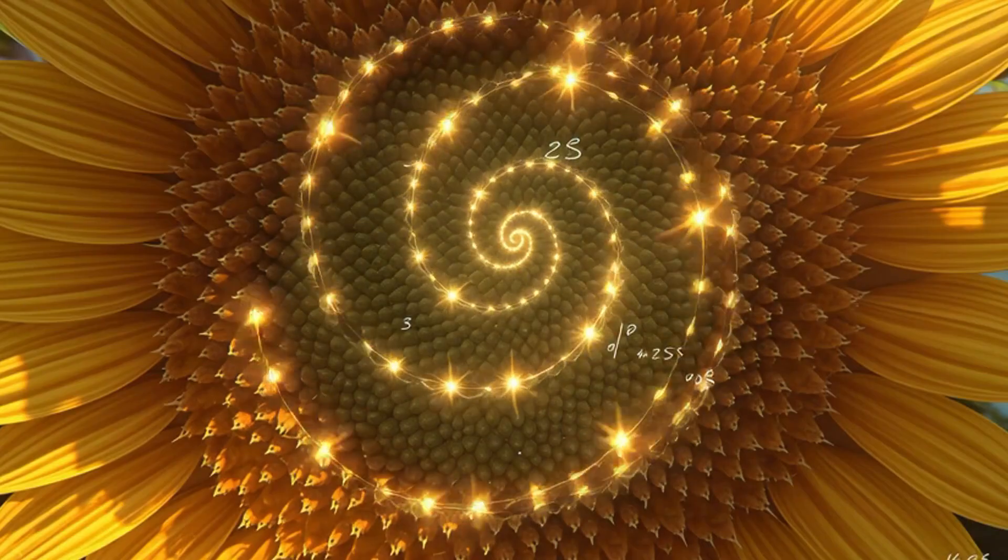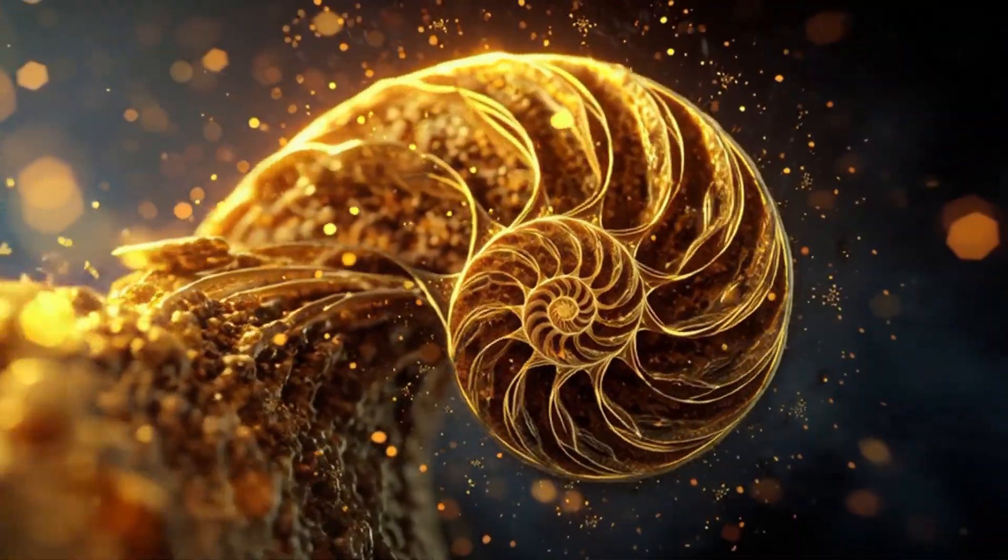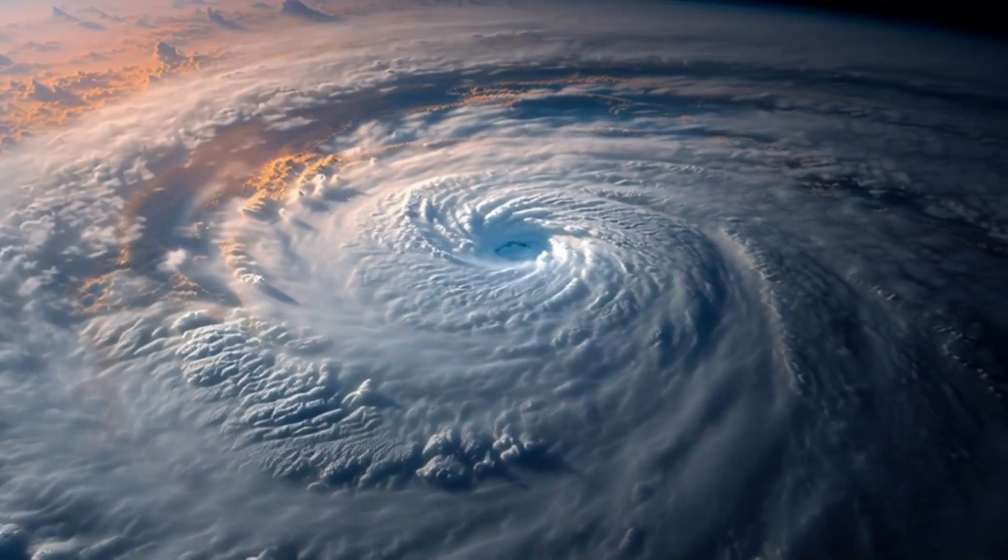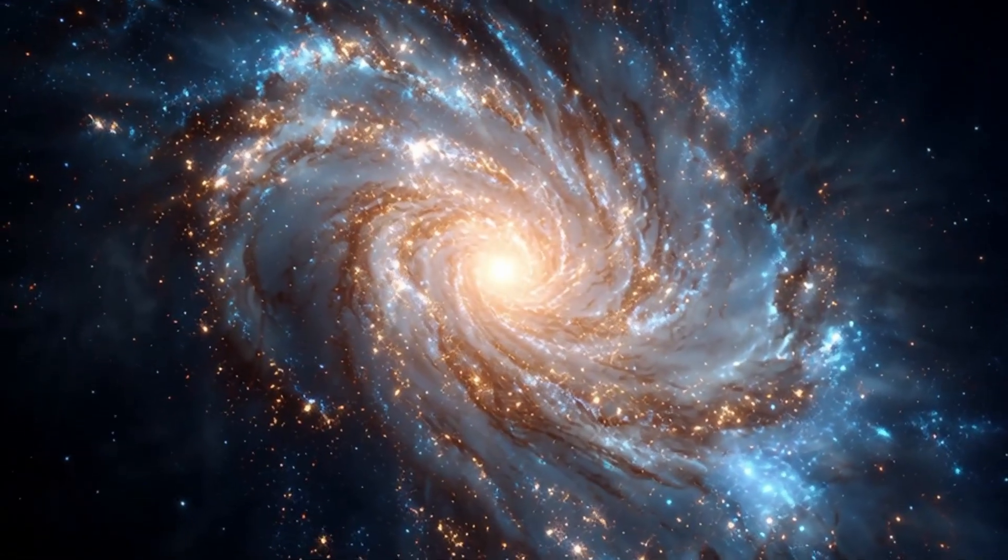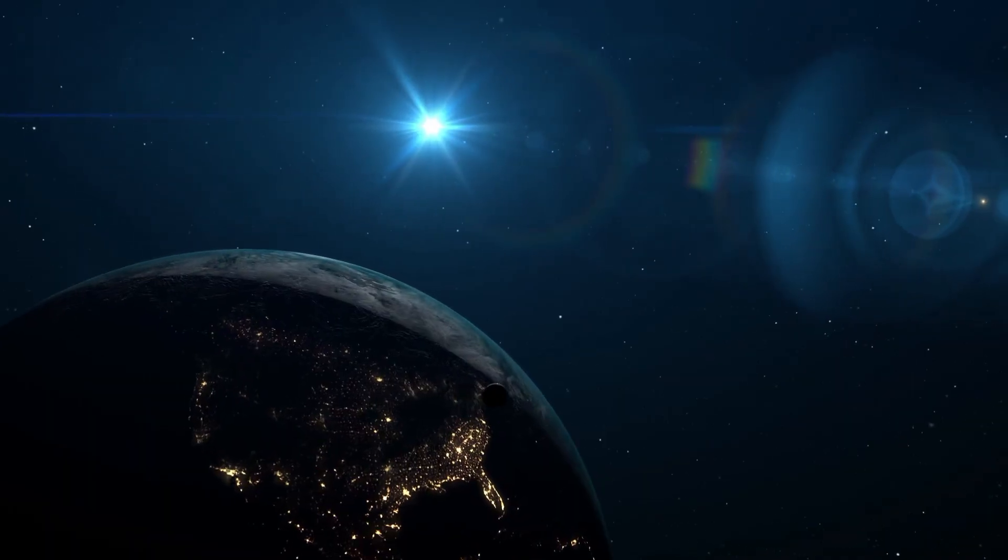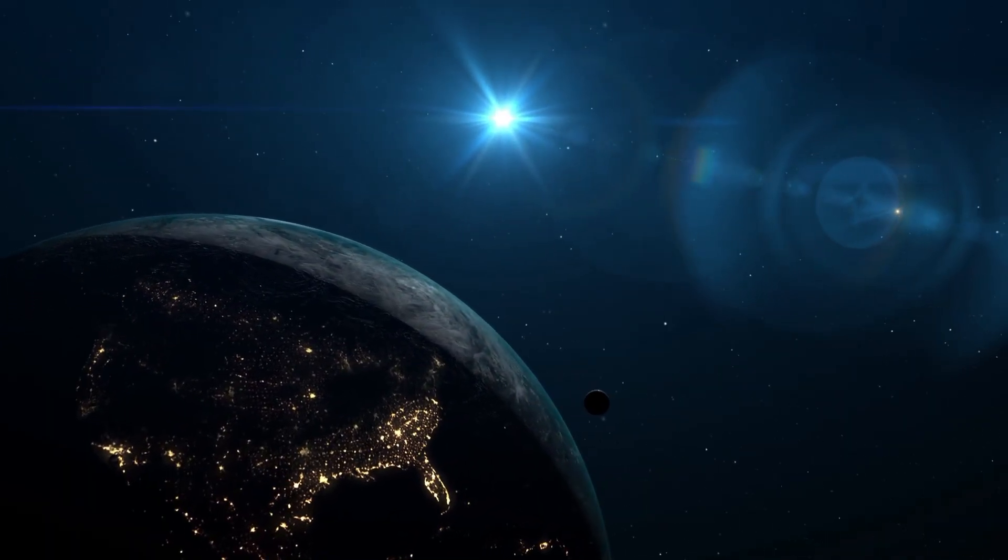The spirals of sunflowers. The curve of a seashell. Proportions of the human body. The structure of hurricanes. Even the arms of galaxies. It is the most natural, beautiful, and mysteriously recurring proportion in the universe.